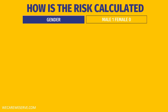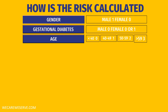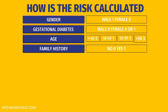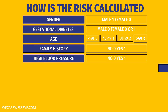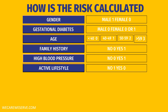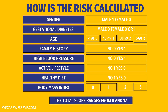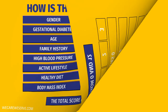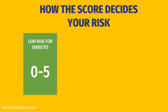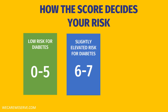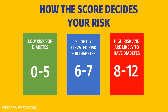Based on responses in the assessment form, points are allotted to determine the score. For example, answering yes to a family history of diabetes assigns one point; a person who is not physically active is also allotted one point. The score ranges from 0 to 12. A score between 0 and 5 indicates low risk; a score between 6 and 7 indicates slightly elevated risk; and a score between 8 and 12 indicates very high risk and likely pre-diabetes.